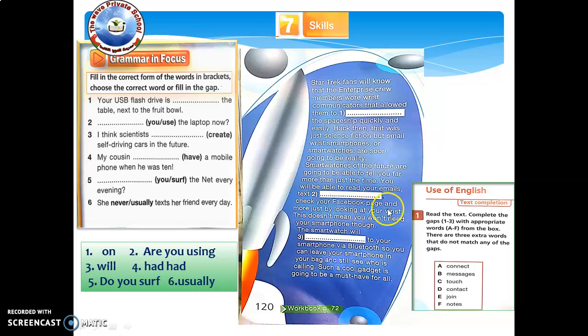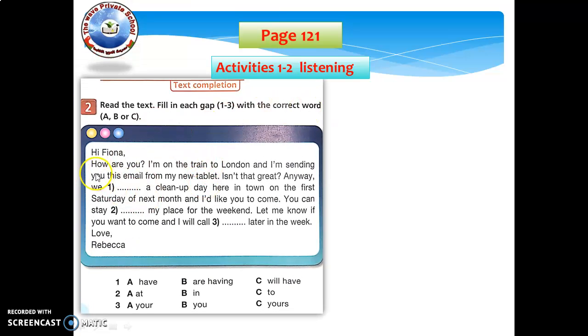You will be able to read your emails, text messages, letter B in number two, check your Facebook page and more, just by looking at your wrist. This doesn't mean you won't need your smartphone though. The smartwatch will connect, A, to your smartphone via Bluetooth, so you can leave your smartphone in your bag and still see who is calling. Such a cool gadget is going to be a must-have for all. Now next, you have page number 121, activities here, 1 to 2 are listening. And then here, this is an email. Read the text and then fill in each gap with the correct answer.